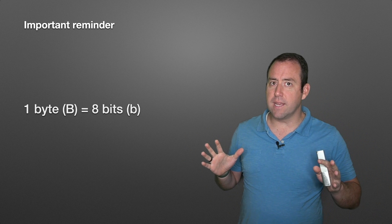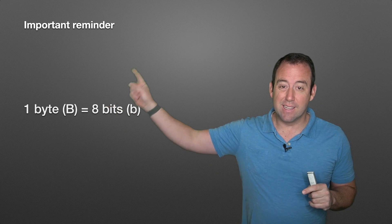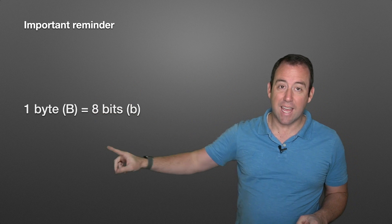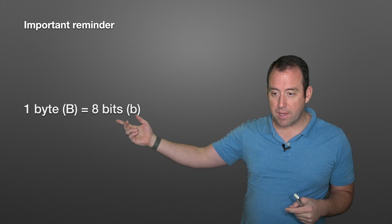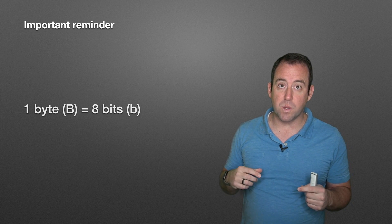Now, one last thing before we close here, an important thing that you need to remember. A byte and a bit are not the same thing. A byte is eight bits. So, and typically a byte is specified with a capital B and bits are specified with a lowercase b.